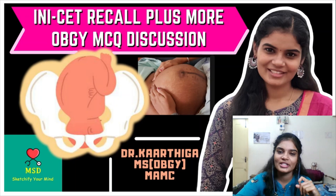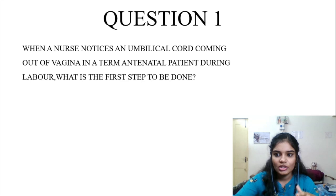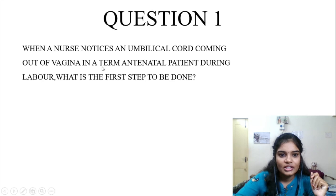This is question number 1. When a nurse notices an umbilical cord coming out of the vagina in a term antenatal patient during labour, what is the first step to be done? Before you look into the options, read the question carefully and come to a diagnosis. Once you have the diagnosis, it will be very easy to exclude the negative options. So here she is a term antenatal patient in labour, and the nurse notices the umbilical cord is coming out. The diagnosis is umbilical cord prolapse.